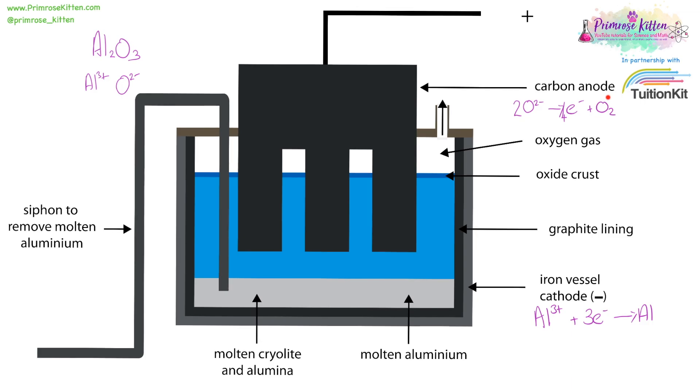Now the problem with all this oxygen gas forming at the positive electrode is that this electrode is made of carbon. Carbon and oxygen gas is eventually going to turn into carbon dioxide. So this positive electrode is eventually going to wear away, or bubble away, as the continued formation of oxygen gas takes off the carbon on the outer layer and turns it into carbon dioxide. So the positive electrode is going to need to be replaced on a regular basis.